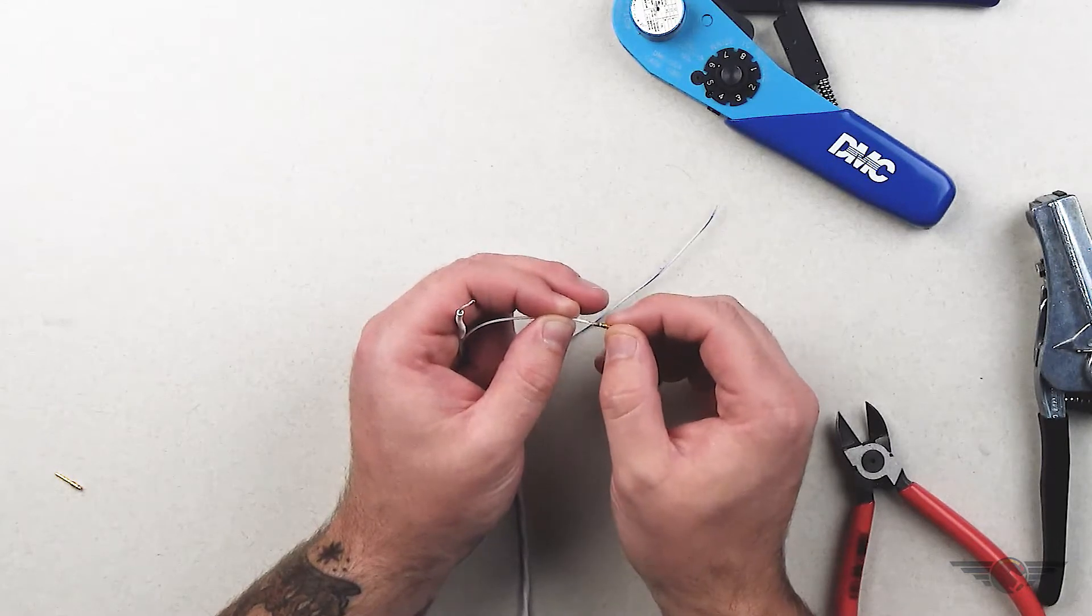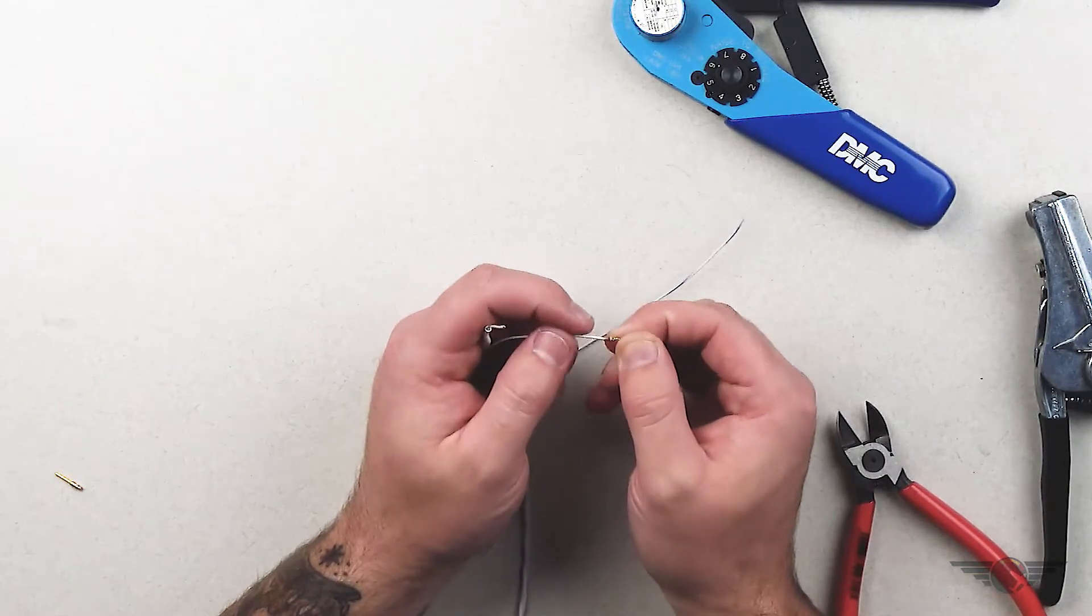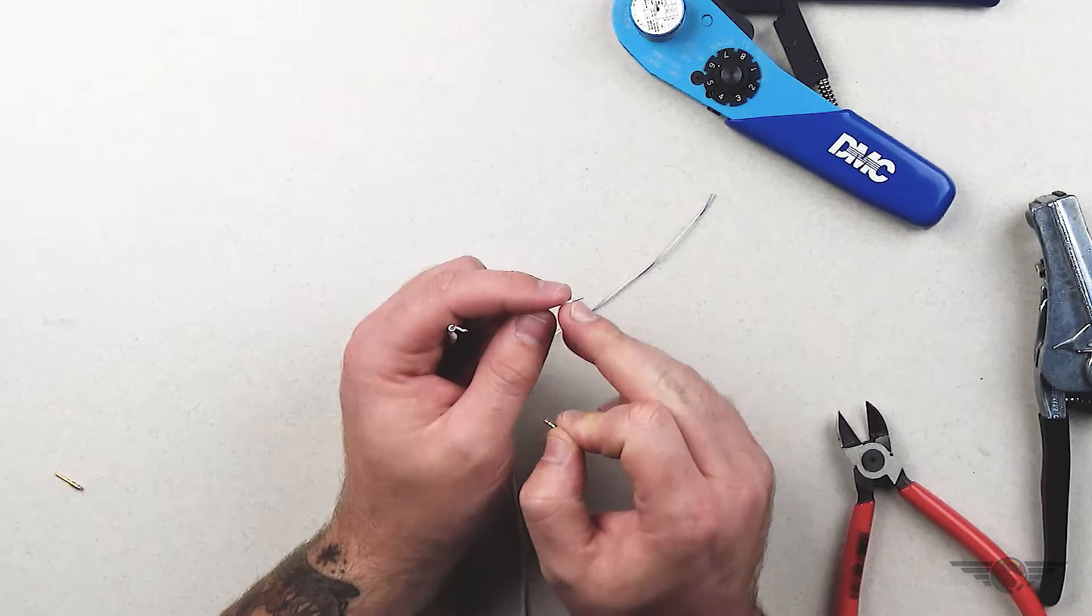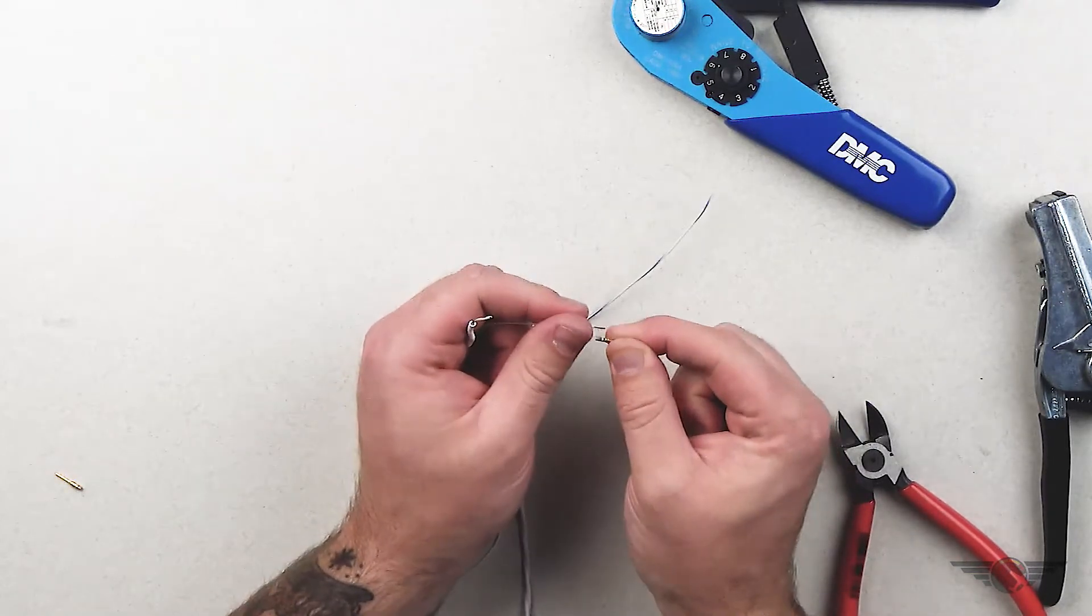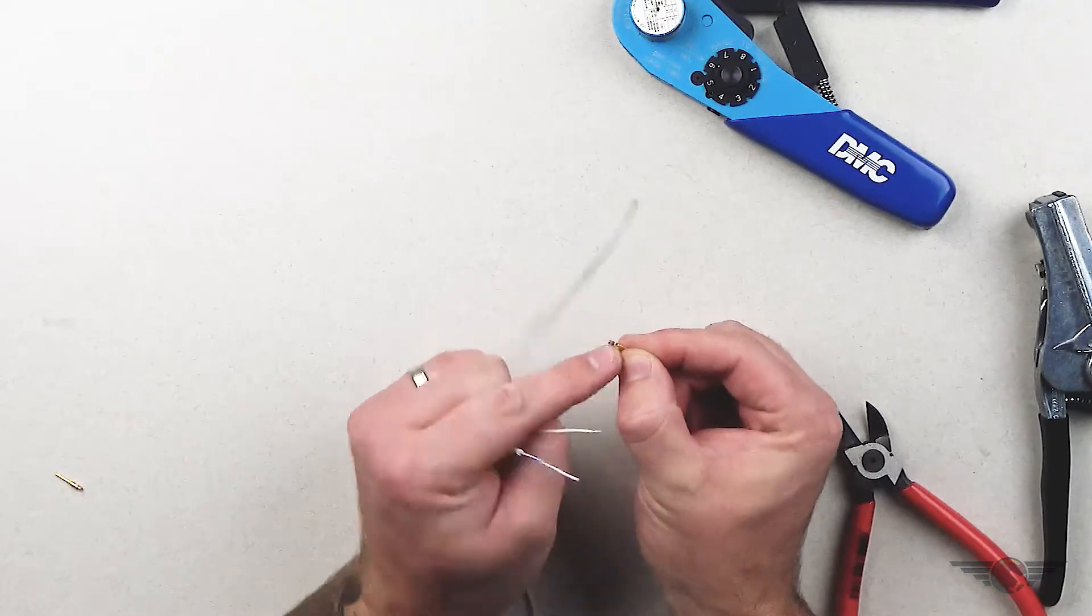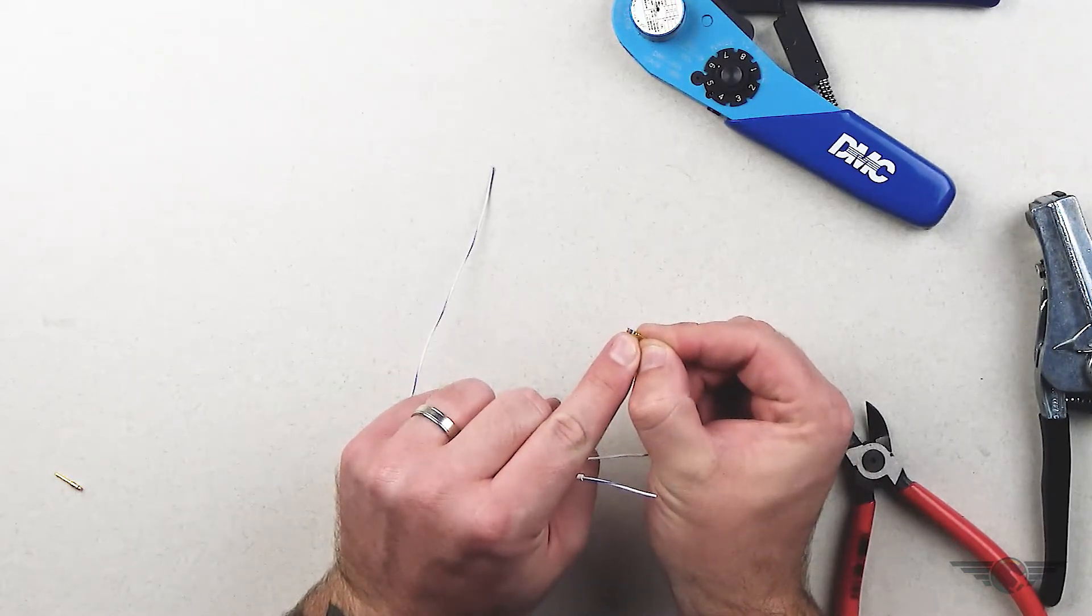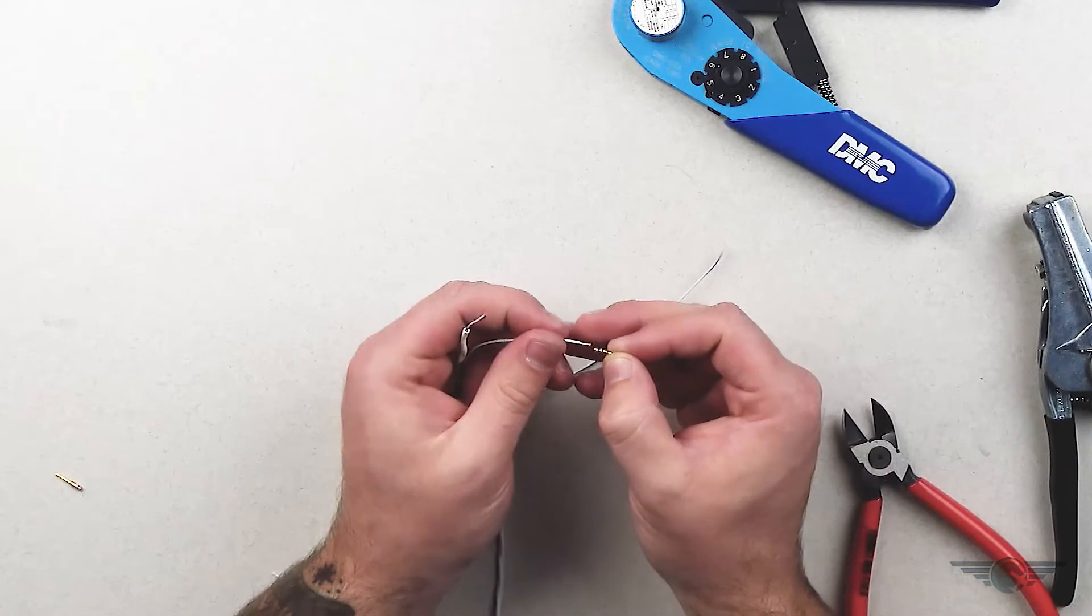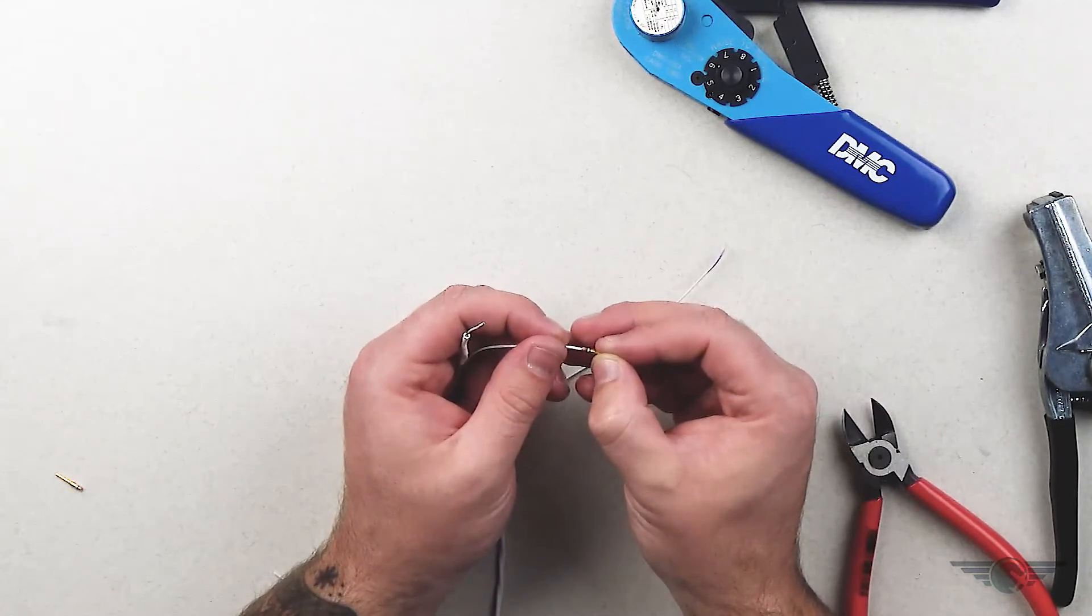Now what's important is you need a little bit of space between your insulation and the bottom of your pin. You also need to make sure you can see the wire in this window. There's a small hole in the pin—you need to visually see your wire in that window.